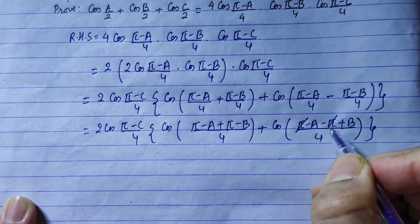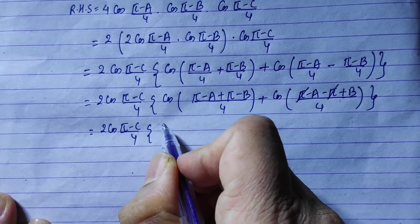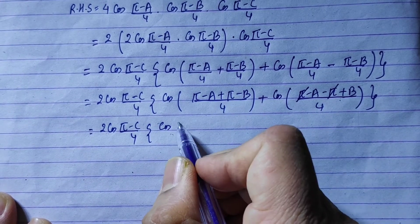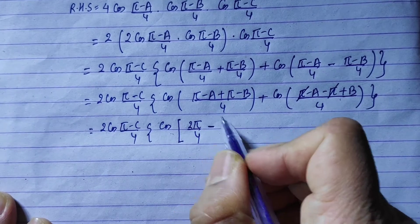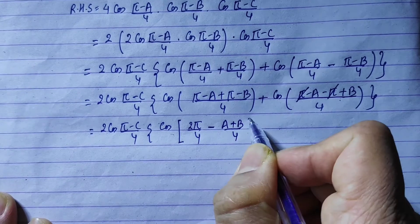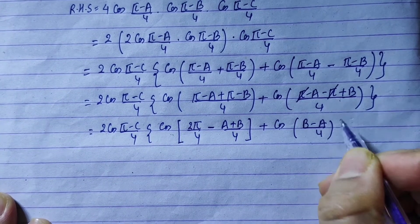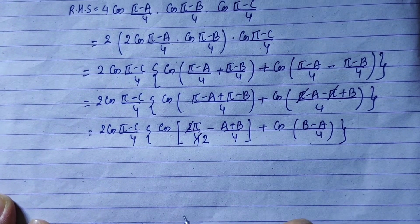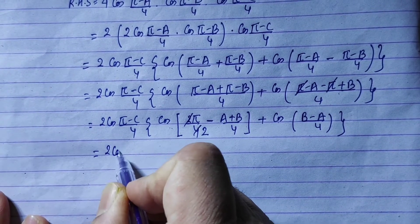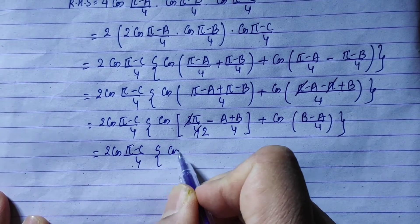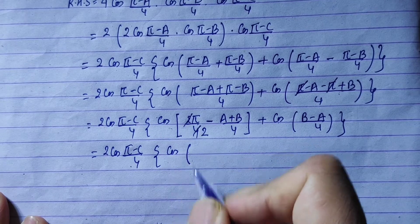We will cut pi by pi in the first term. This gives 2·cos((π-c)/4) into cos((2π-(a+b))/4) plus cos((b-a)/4). The term (2π)/4 simplifies to pi/2, which is 90 degrees. Using the identity cos(90°-θ) = sin θ, the first cosine term becomes sine.